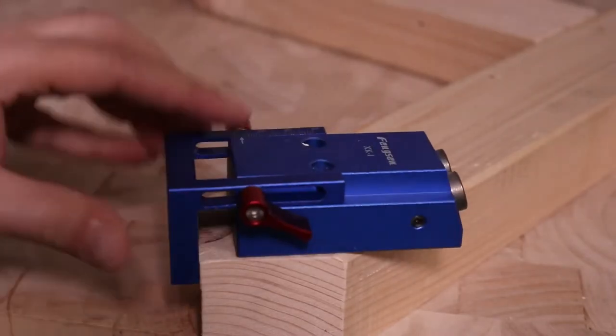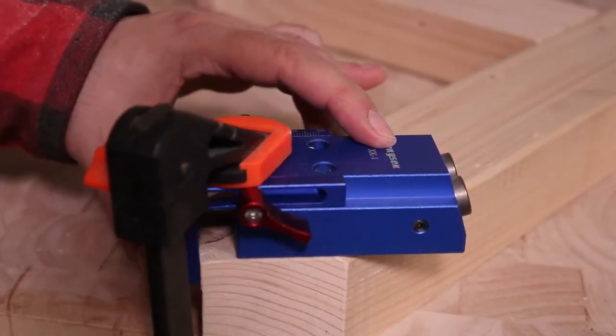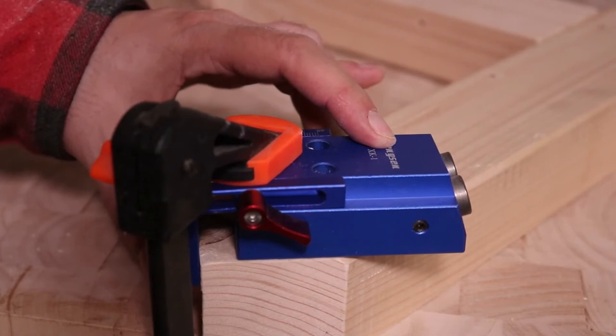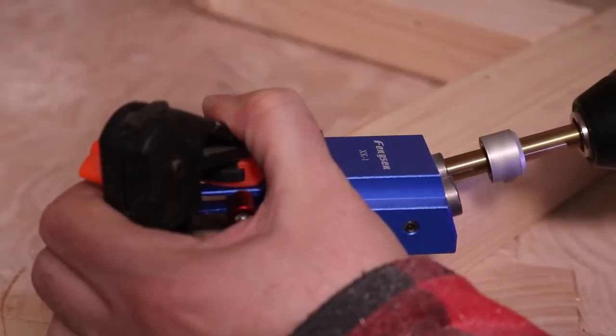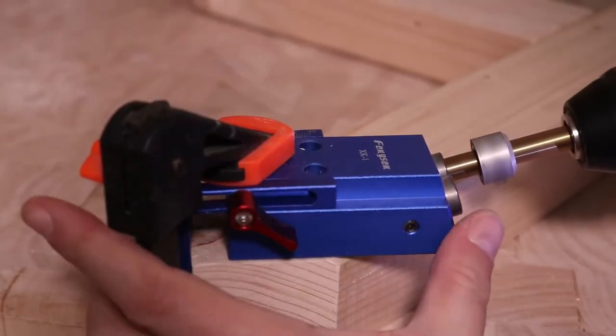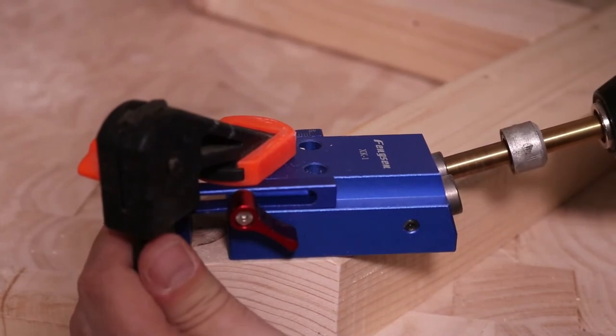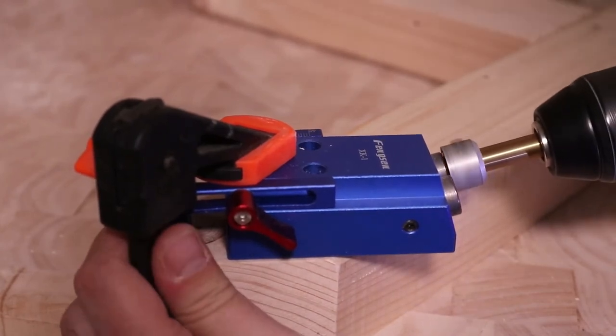With the use of my cheap no-name jig I drilled the pocket holes. Since this structure is invisible beneath the tabletop I had no problem with using screws to connect it to the tabletop and the table base.